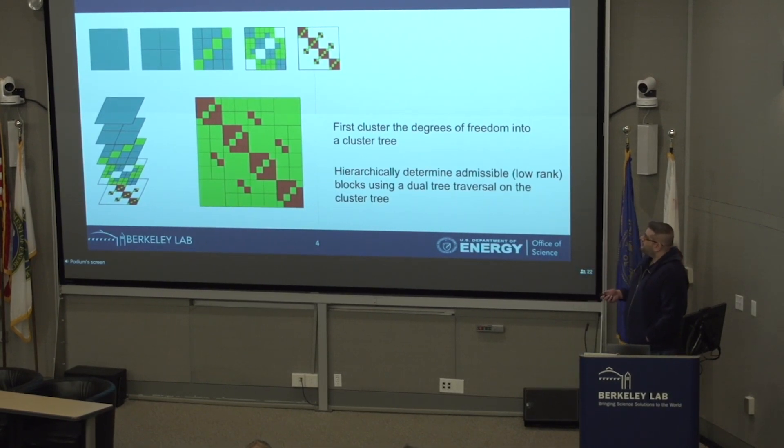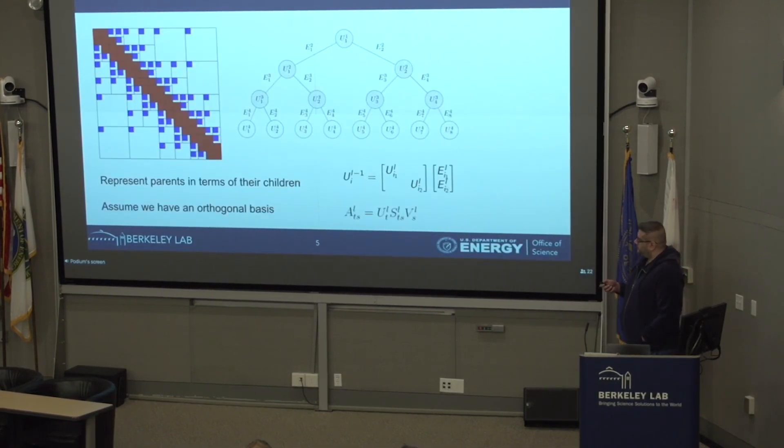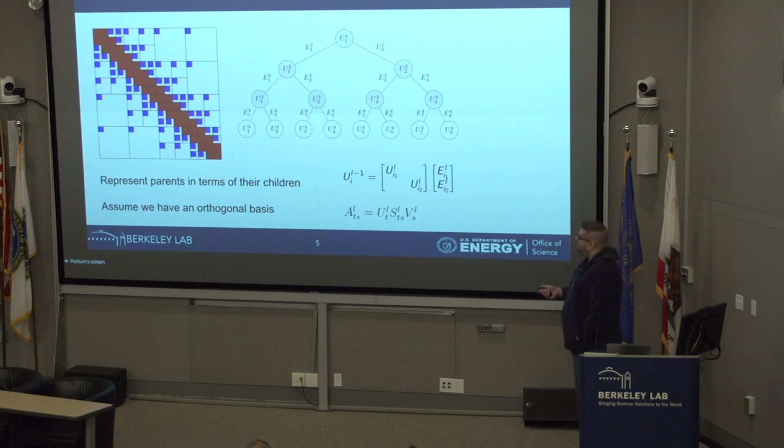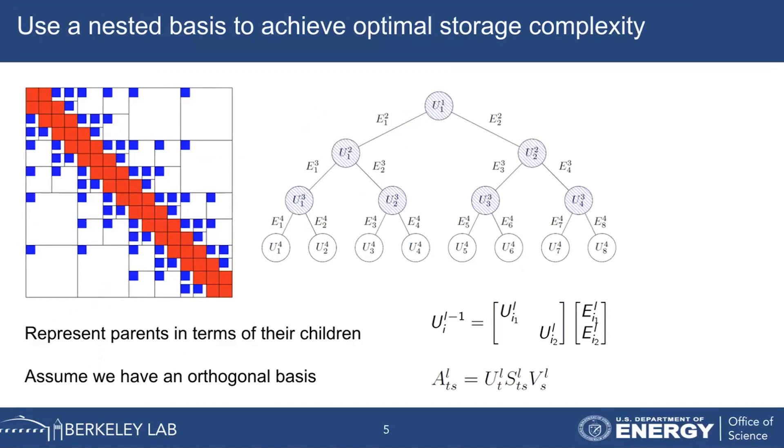We have a structure, and we'd like to be able to compute with it. But first, we want to convert that H matrix, which was order n log n, into something that is optimal. To do that, we represent the basis as a nested basis. Those U's and V's that I talked about at the start, instead of representing them directly, we would have an implicit representation between levels in the tree.